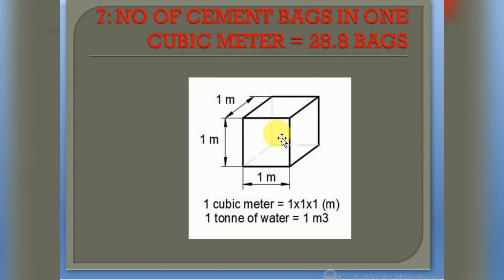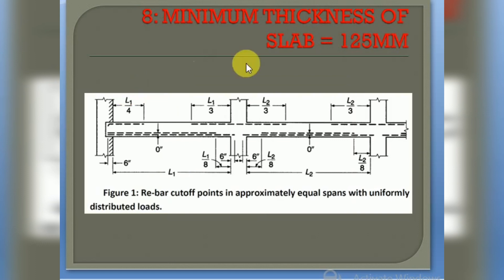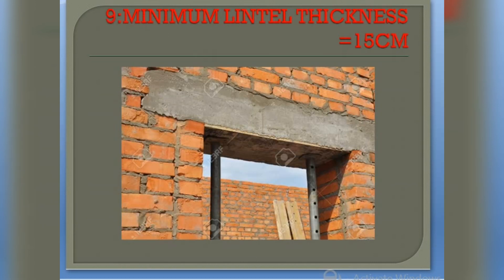The next point is the minimum thickness of slab, which is 125 mm. Here I have shown you the slab — this thickness must be 12.5 cm or 125 mm. We can provide more thickness, but the minimum should be at least 125 mm.